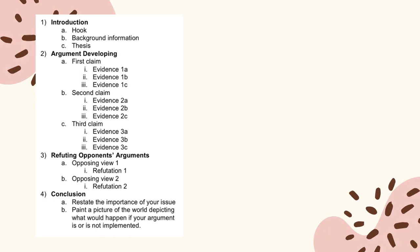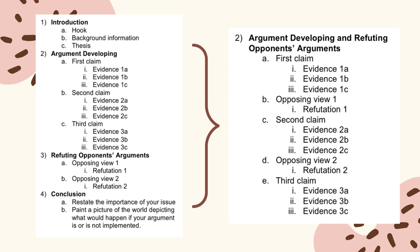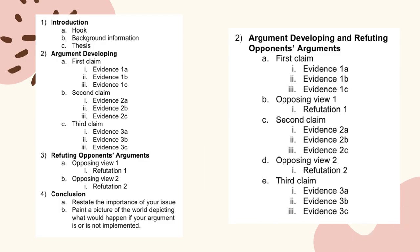And then this is a template for what an argumentative paper would look like. It looks a little bit different in that it has claims instead of subtopics for the paragraphs. And then at the end, before your conclusion, you have a final section talking about the opposing views of that argument. Another way to think about it would be to add the opposing views after each of your claims, if you have many opposing views and could have one for each.